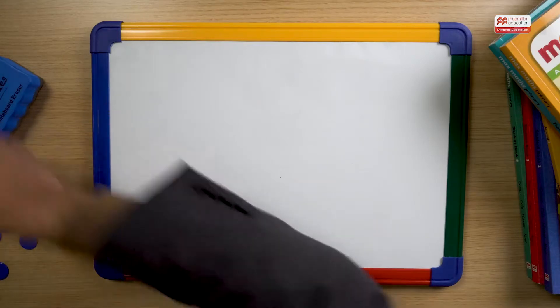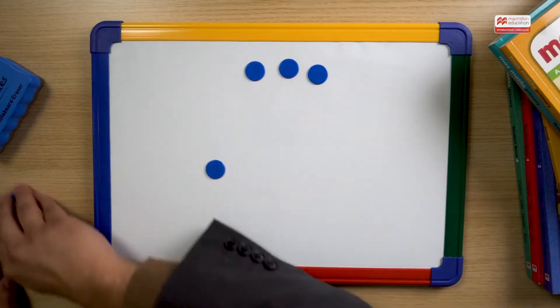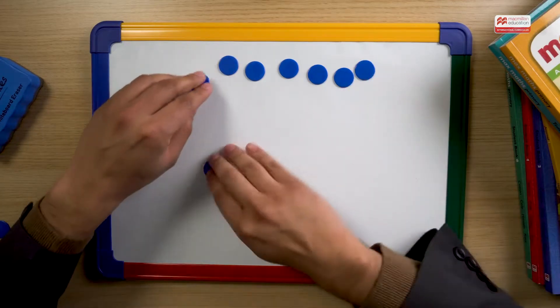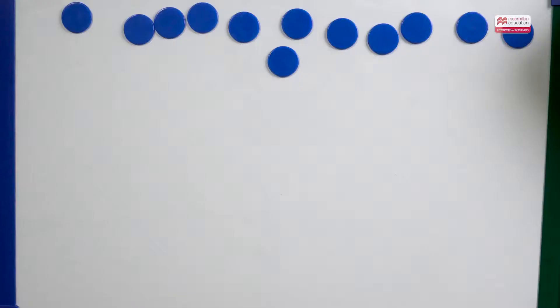In order for us to look at this lesson, I'm going to show using concrete materials, using a CPA approach. So I'm going to have 12 counters in front of you, and we might have three baskets.